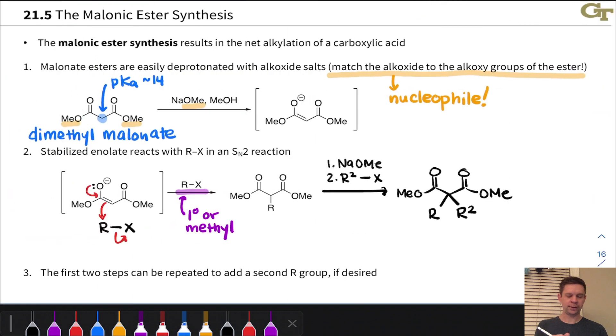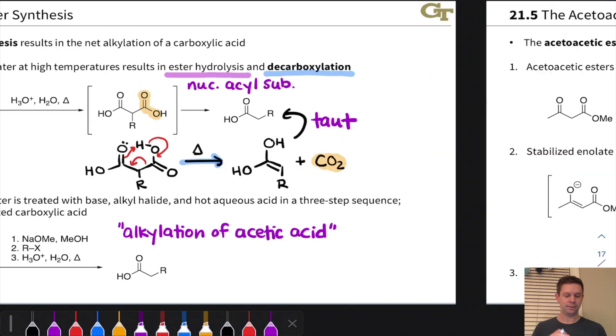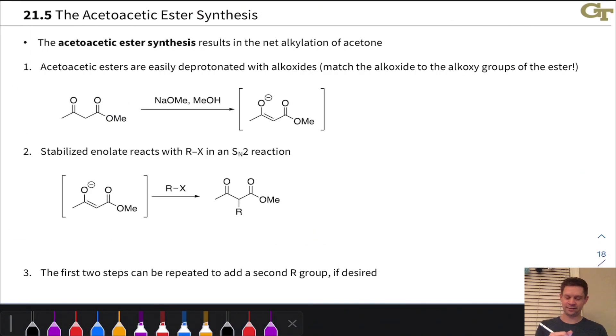And just to drive this point home, so here's dimethyl malonate. Here's our second methoxy group. In methyl acetoacetate, that methoxy group is a methyl. And so this is a ketone, not an ester.